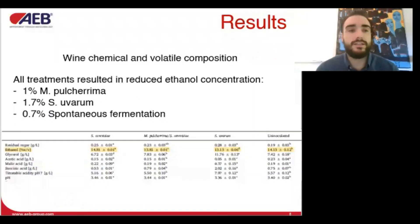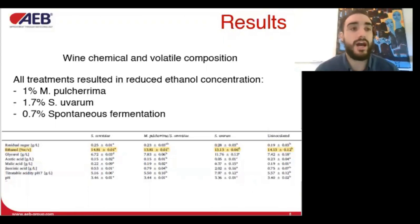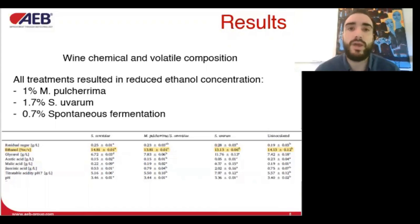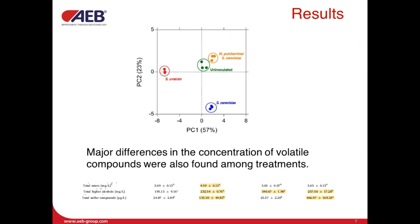All treatments resulted in a reduced ethanol concentration, ranging from 0.7 up to 1.7 percent. Glycerol, succinic acid, and titratable acidity were higher for all treatments, while no difference in malic acid was measured due to the malolactic fermentation. Major differences in the concentration of both volatile compounds were measured, and interestingly, even though Saccharomyces cerevisiae dominated the fermentation with Metschnikowia pulcherrima, these wines were most similar to uninoculated fermentations.